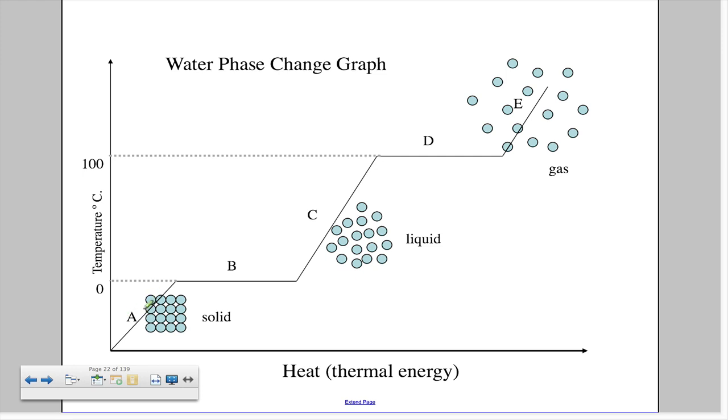If you were to take a set amount of ice and begin heating it, starting at a temperature below zero—if you were to heat it, its temperature would rise until it got to the zero point. Then the temperature would remain very steady. During this point, it is melting.